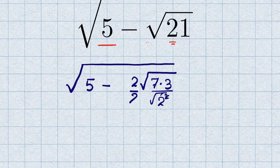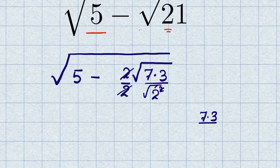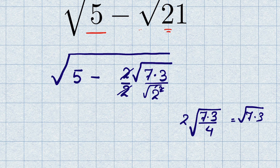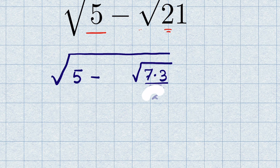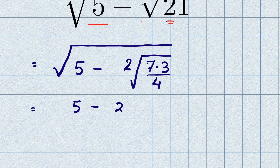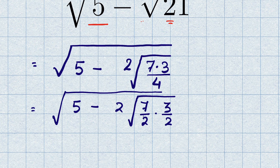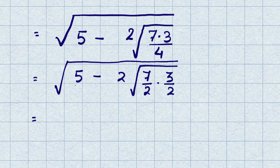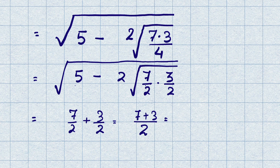So we can write 5 minus 2×√(7×3/4) as 5 minus 2×√(7/2 × 3/2), all under square root. Now, can we write 5 as 7/2 plus 3/2? If we add these two fractions, the LCM is 2, giving (7+3)/2 = 10/2 = 5. Yes! So 5 equals 7/2 plus 3/2.